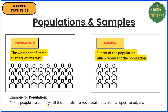Examples of a population: all the people in a country, all the animals in a zoo, or the total stock from a supermarket. Population doesn't just mean humans or animals — it means any total set of items you are interested in. A hidden exam question here: define population, define sample, or explain the difference. Population is the whole set; sample is the subset.